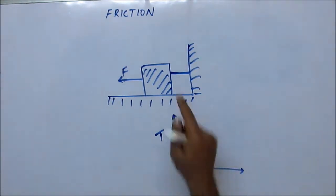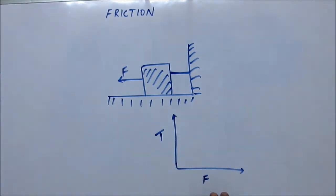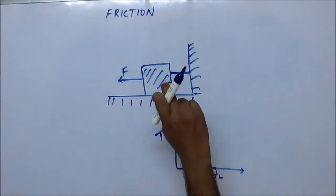Unless the block starts to move or unless there is some tendency of movement, unless there is some stretch in the string, there will be no tension. The block is not going to move unless the applied force is going to be greater than the value of limiting friction. Until then, tension will be zero.